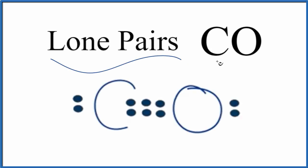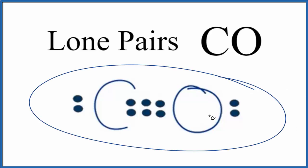Let's find the number of lone pairs for CO. This is carbon monoxide. So to find the lone pairs for CO, we need a valid Lewis structure. So this is the Lewis structure for carbon monoxide.